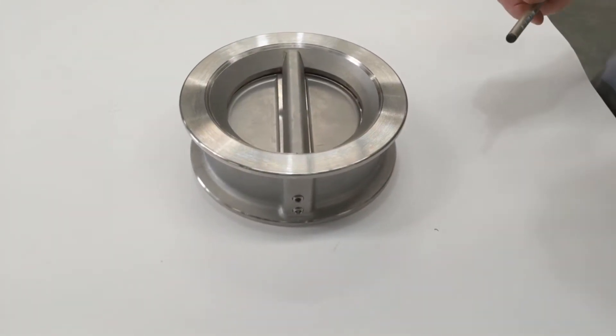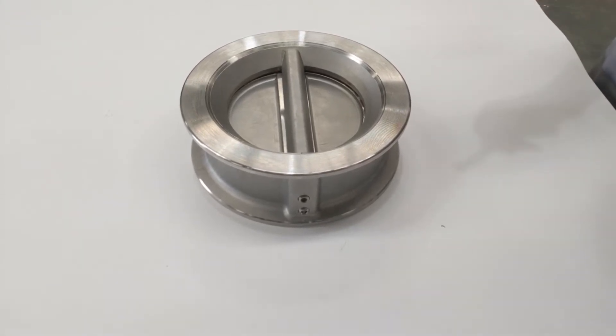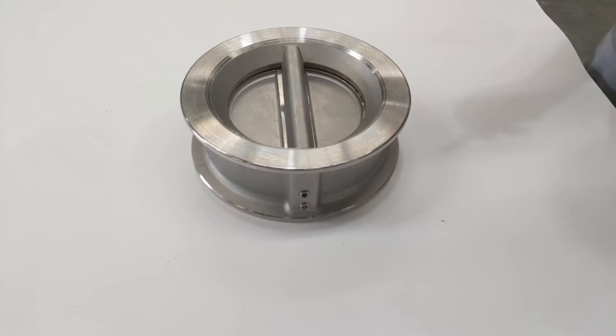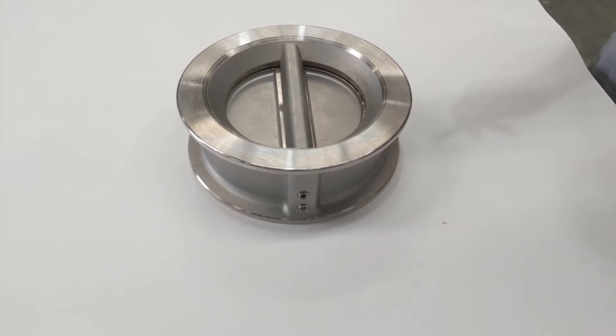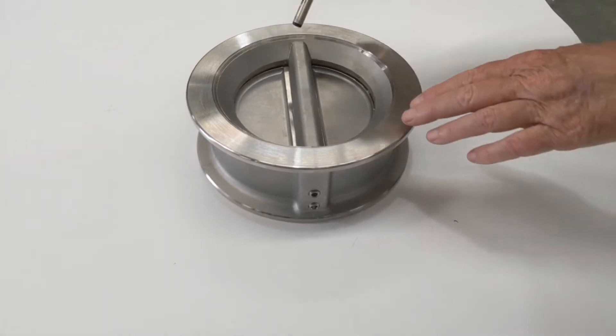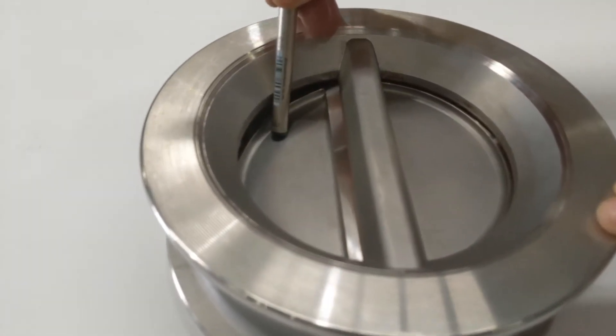This is a wafer duo check valve up to 40 bar working pressure and up to 180 degrees C, not necessarily both together but they can tolerate that. The reason is that the FKM seat which is inside there, I'll just put that up afterwards.